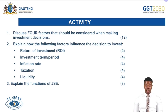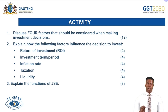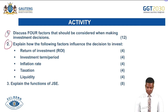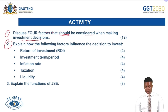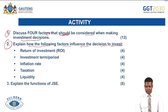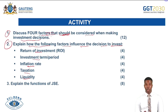We now have an activity to give you a clue about how you may be assessed in the exam. The same content can be tested in different ways — for example, one question may ask you to outline factors to be considered when making an investment decision, while another may ask you to explain how the following factors influence the decision to invest. The question may be phrased differently, or may ask you to discuss any four factors of your choice.